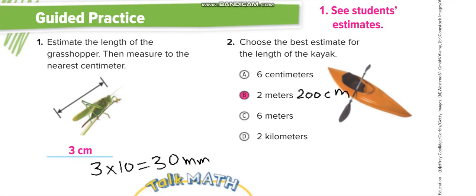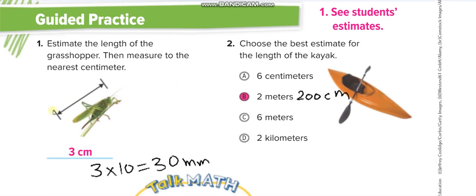For this next object, place your ruler on the centimeter side — not the inches side. Put zero on one side and check the number on the other side. The measurement is three centimeters. To convert to millimeters: three times 10 equals 30 millimeters.